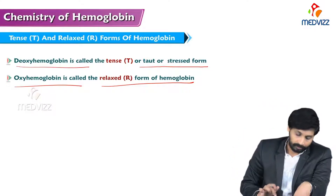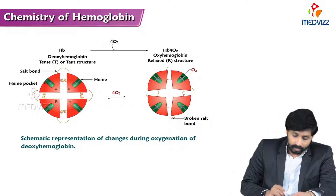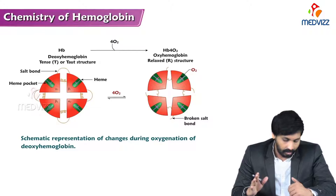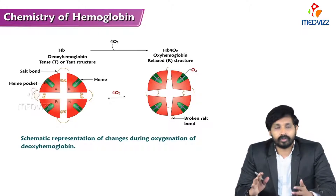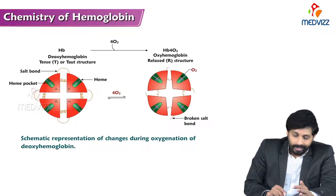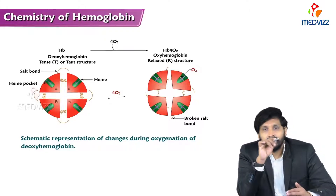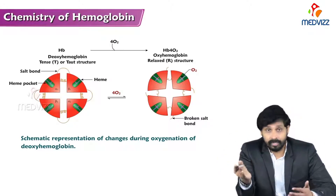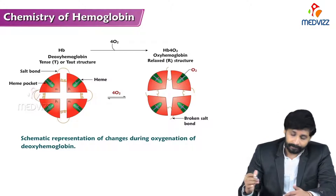In the diagrammatic representation of T and R forms, the red-colored globin chains each carry a heme shown in green. All globin chains are joined by non-covalent bonds such as hydrogen bonds, salt bonds, ionic bonds, and van der Waals forces. When oxygen attaches, the deoxyhemoglobin T form is converted to oxyhemoglobin R (relaxed) form.